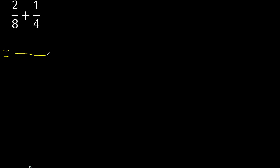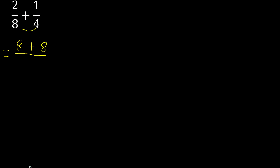First, multiply like this: 4 multiplied by 2 is 8, plus 8 multiplied by 1 is 8. Here 8 multiplied by 4 is 32.